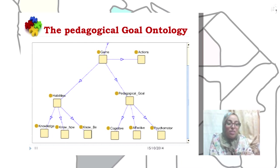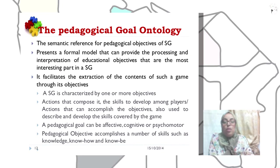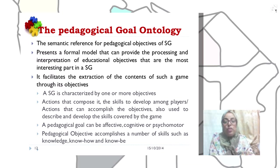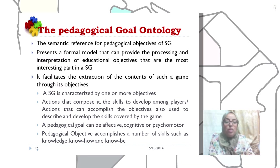The second step of our research work is the definition of the ontology of the pedagogical goal. Our ontology gathers concepts such as actions, abilities, and the pedagogical goal. The pedagogical goal ontology represents the semantic reference for pedagogical objectives of serious games, and presents a formal model that can provide the processing and interpretation of educational objectives — the most interesting part in a serious game. It facilitates the extraction of the contents of such a game through its objectives. A serious game is characterized by one or more objectives, actions that compose it, the skills to develop among players, and actions that can accomplish the objectives.